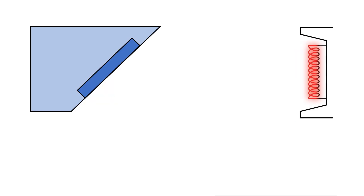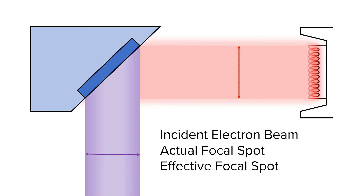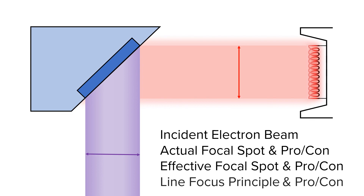And that's everything on focal spot and line focus principle. Be sure to be very familiar with the differences between the incident electron beam, the actual focal spot, and the effective focal spot. Because in radiography there are rarely absolutes when picking techniques, you'll need to know the pros and cons of a small or large actual focal spot and effective focal spot, plus the pros and cons of a small and large angle with the line focus principle.